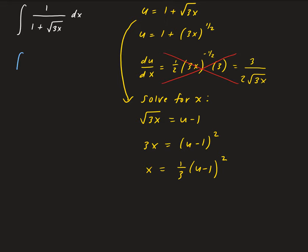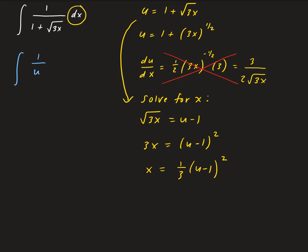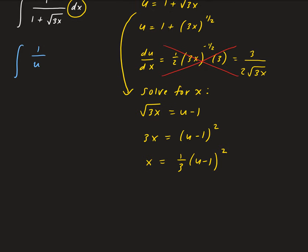Let's go back to the integral. We have the integral of 1 over u, and now we have dx which we need to convert in terms of u. Taking the derivative of x equals 1/3 times (u minus 1) squared with respect to u, we get dx equals 2 thirds times u minus 1 du.